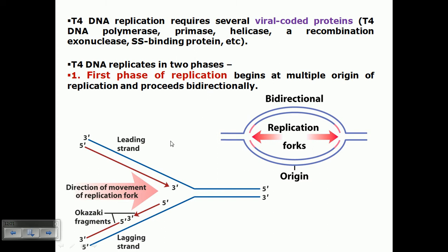The second phase is slightly modified compared to the first. In the first phase, replication begins at multiple origins, forming a replication fork or replication bubble, which migrates in both directions and finally meets at a particular location. That is how this process begins.